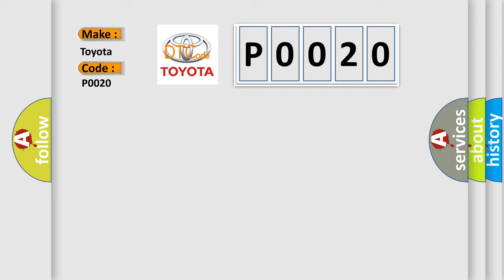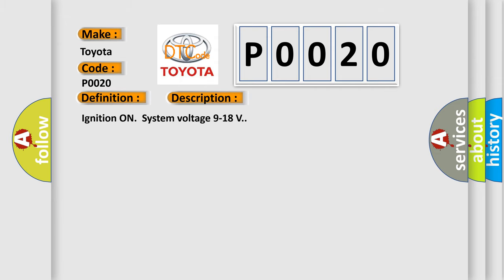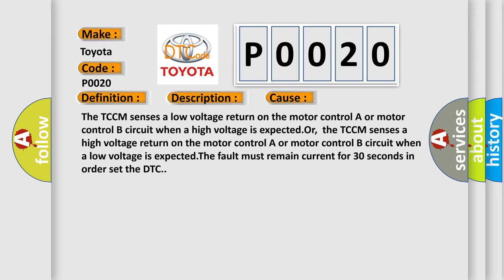The basic definition is Motor A or B circuit malfunction. Here is a short description of this DTC code: ignition on, system voltage 9 to 18 volts. This diagnostic error occurs most often in these cases: the TCCM senses a low voltage return on the motor controller or motor control B circuit when a high voltage is expected, or the TCCM senses a high voltage return on the motor controller or motor control B circuit when a low voltage is expected. The fault must remain current for 30 seconds in order to set the DTC.